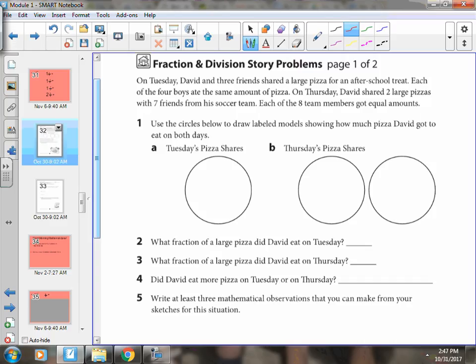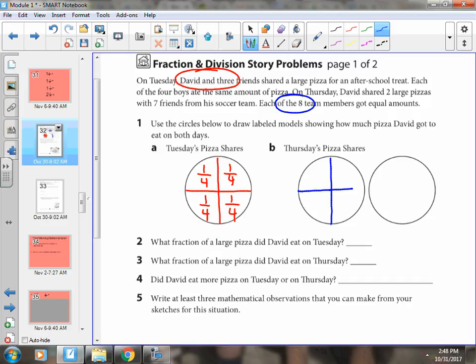On Tuesday, there are four people. So Tuesday's pizza would be split into fourths. Each boy or girl gets one fourth of a pizza. On Thursday, David shared two large pizzas with him and seven friends. So that's eight team members. You could also split it into fourths, and each kid gets one fourth of one pizza.